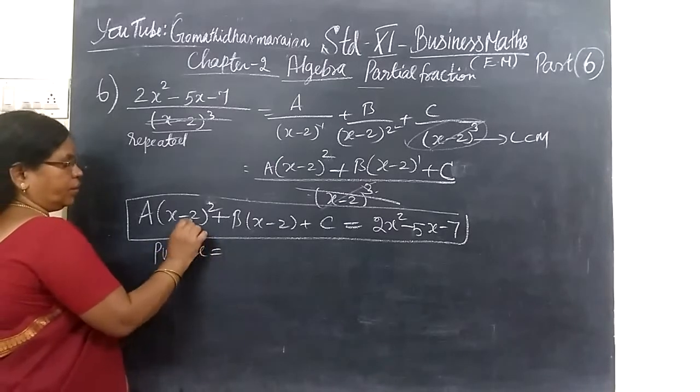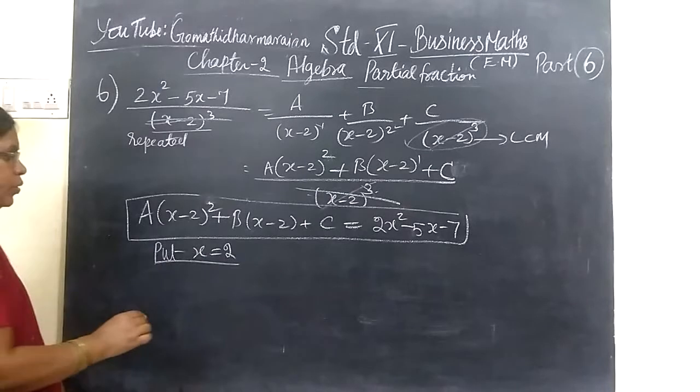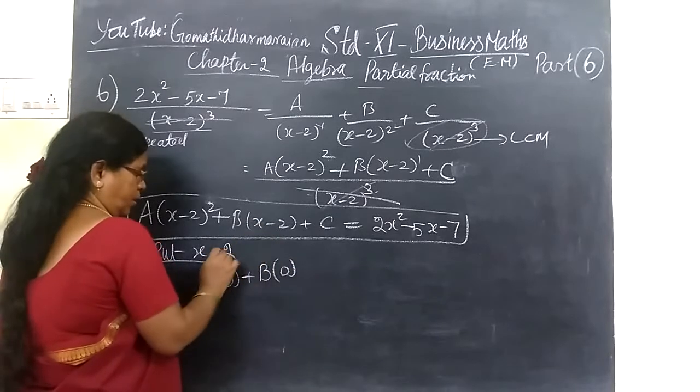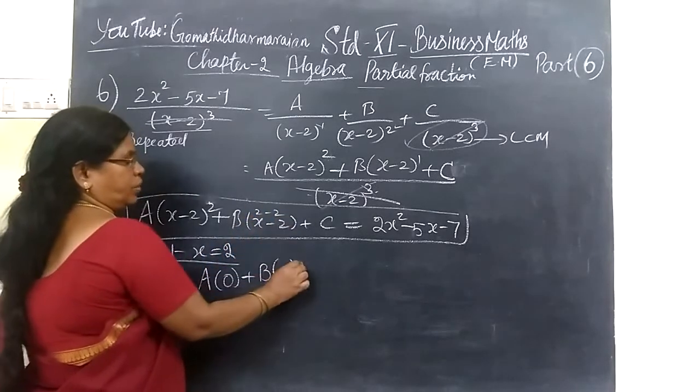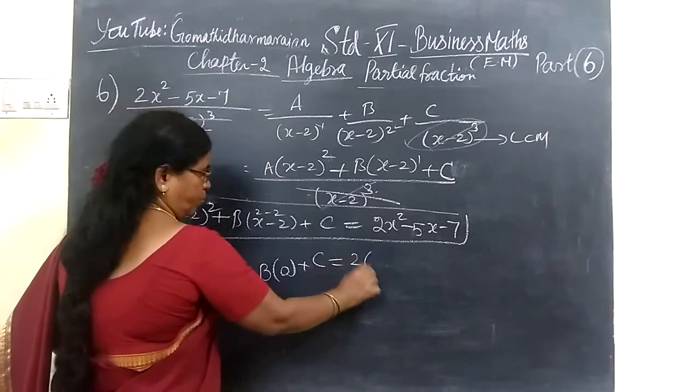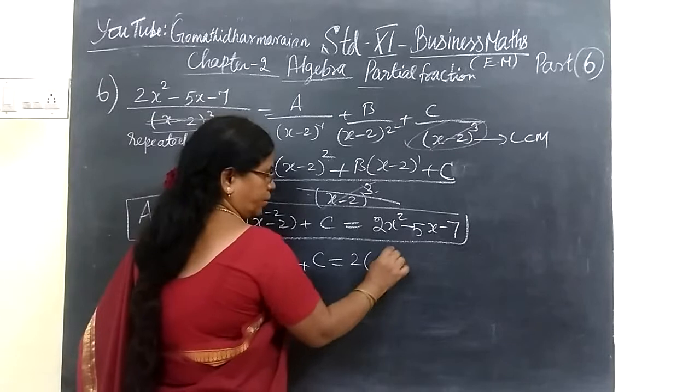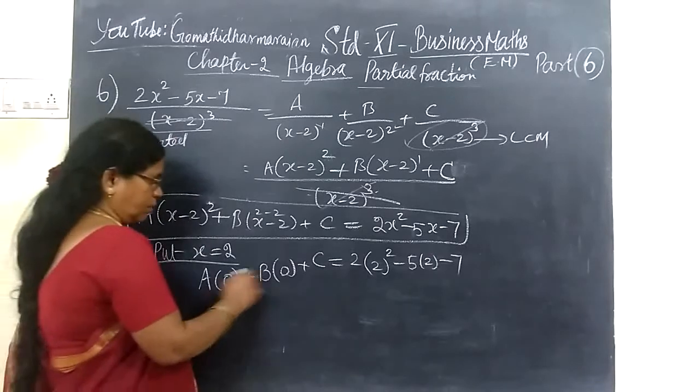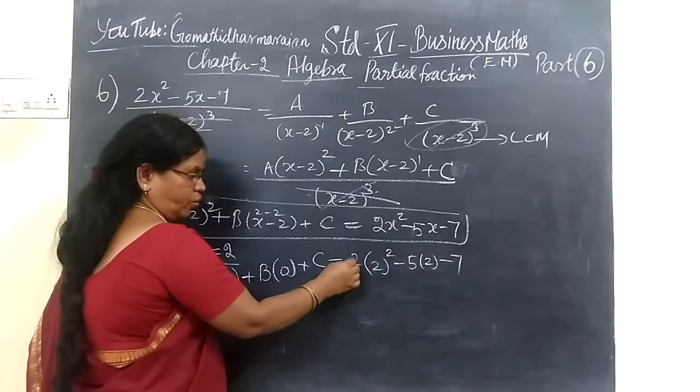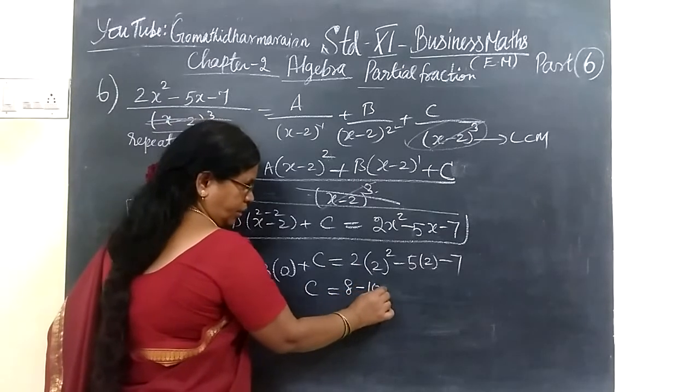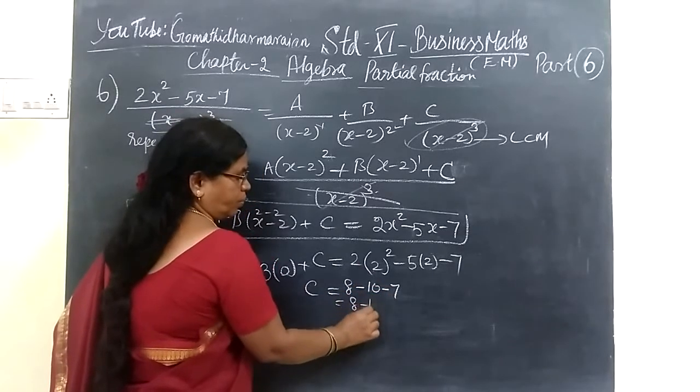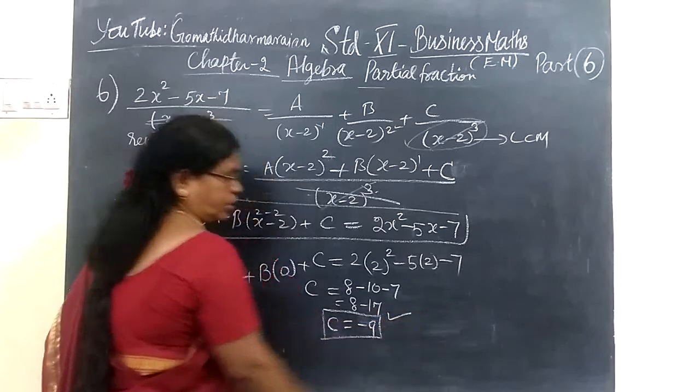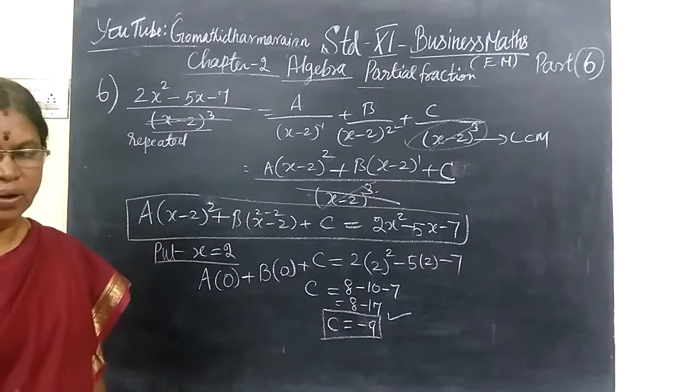Put x equal to this in the power 3, then minus 2. Then C, this is equal to 2 bracket. For x you are substituting 2, x will be you are substituting 2 in the power 3, then minus 7. So you can simply C only. C equal to 2 minus 4, 4 is 4, take minus 10, then minus 7. So 8 minus 17, so C equal to minus 9. You have found the C value at minus 9.